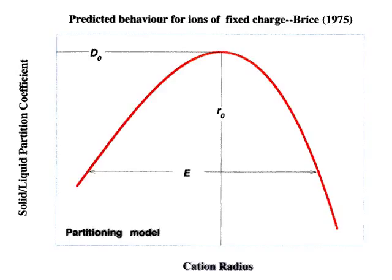I'll start with a summary of the Brice model, which many of you will be very familiar with. The basic idea is that if we have ions of a fixed charge — say 1+, 2+, or 3+ — when they enter a site in the structure which has radius R₀, if the radius of the ion is larger or smaller, it will strain the structure. The partition coefficient for this ion will be lower than for an ion which has exactly the same radius as the site, because of the strain energy term.